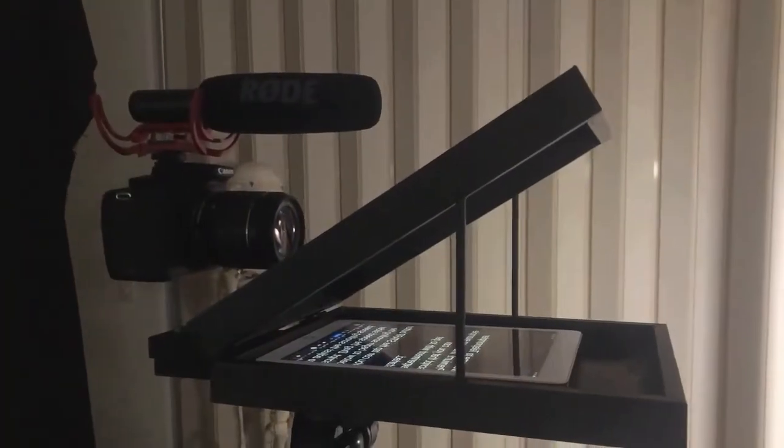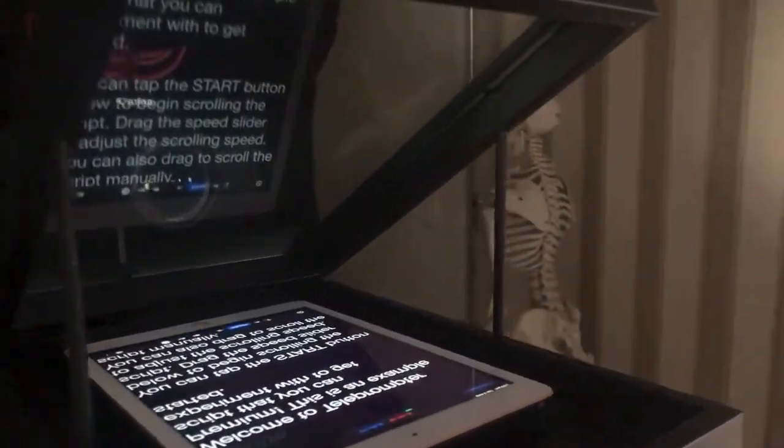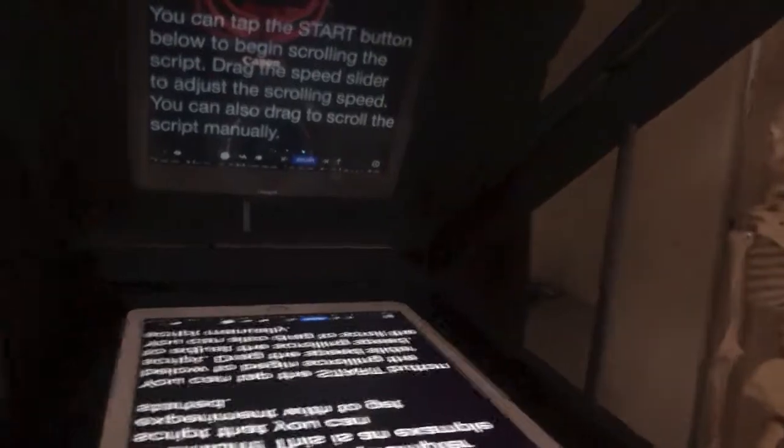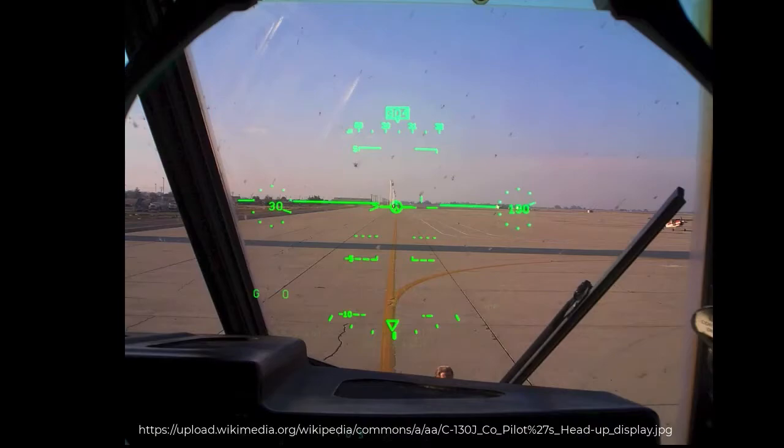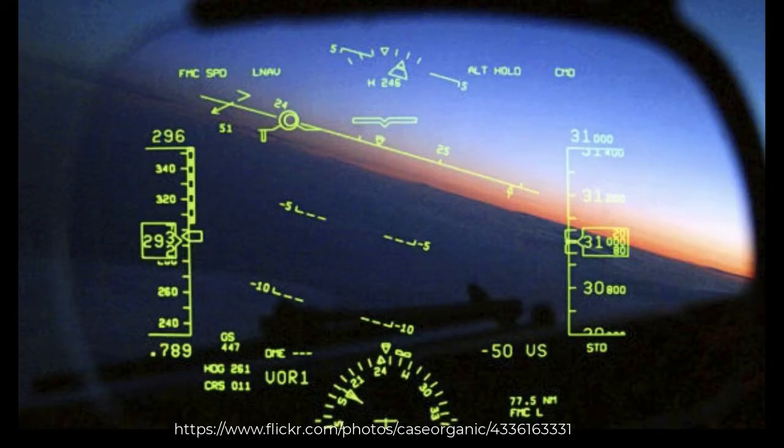Modern application of Pepper's ghost illusion is the teleprompter. The talent looks directly at the camera as they read the text reflected off the glass. The camera doesn't see the text at all. This is the same principle as heads-up displays in modern cars and fighter jets.